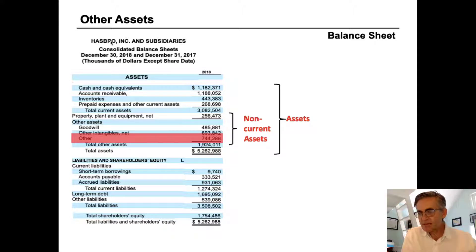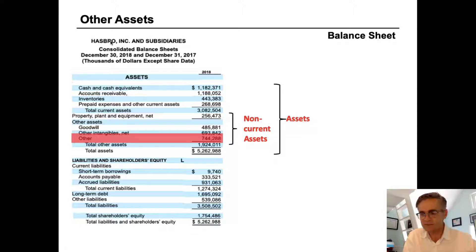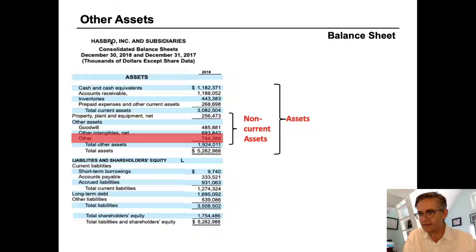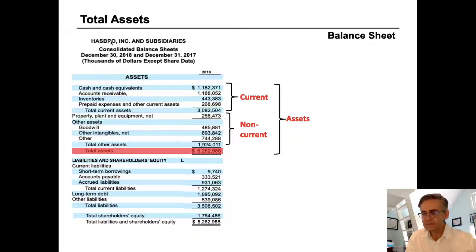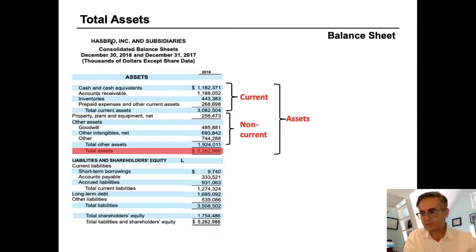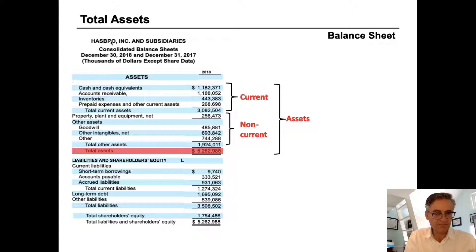There's also a grouping called other assets — assets that don't neatly fit into the categories we've discussed. This could include deferred tax assets, long-term prepaid expenses, prepaid pension expenses, or loans to officers not expected to be paid back within the year. If you want to know specifically what's in the 'other' bucket, the best approach is to read the notes to the financial statements included in the 10-K, where you'll get a detailed description of what specific assets are bundled there. That brings us to total assets — $5.26 billion for Hasbro on this day. In the next video, we'll look more closely at liabilities and shareholders' equity.